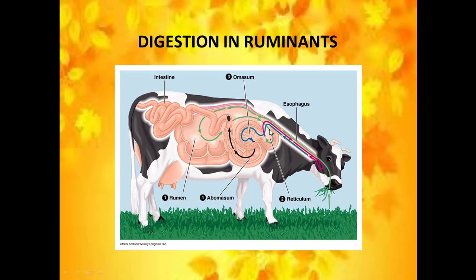When the cellulose is broken down into simpler substances, the food moves back by anti-peristalsis and reaches the second chamber called the reticulum. Here it is formed into a ball-like structure called cud — the partially digested food which is semi-solid in nature. This cud is sent back to the mouth by anti-peristalsis. When the cow relaxes during its leisure time, it chews the food again. This chewing and rumination is why these animals are called ruminants.